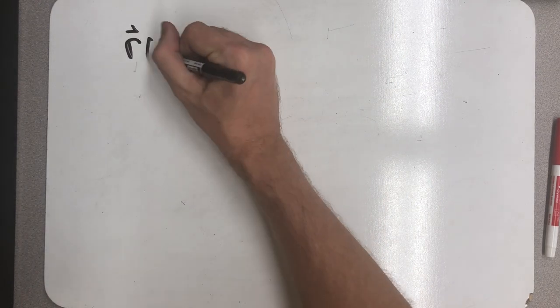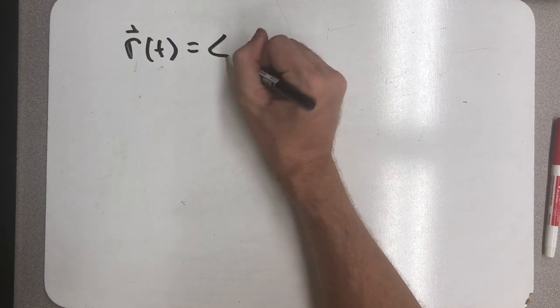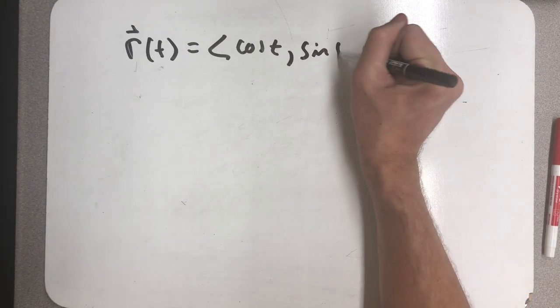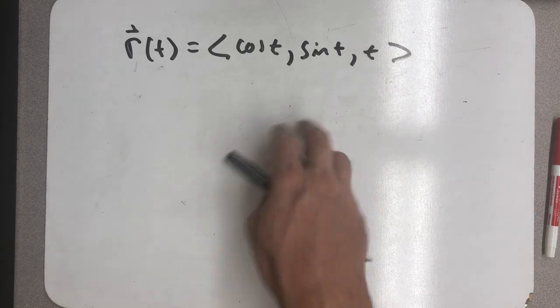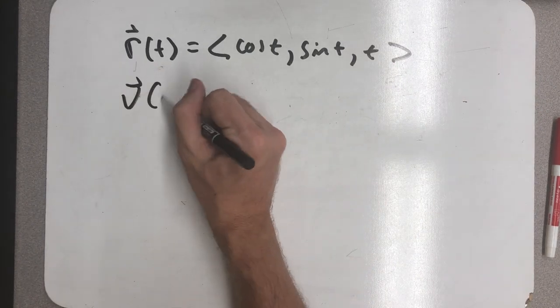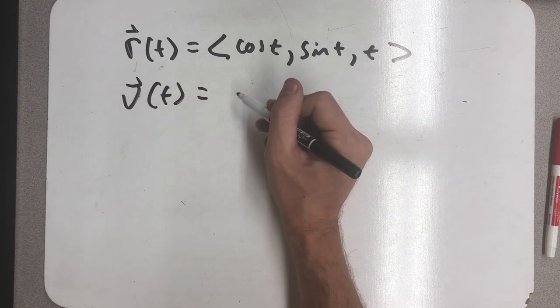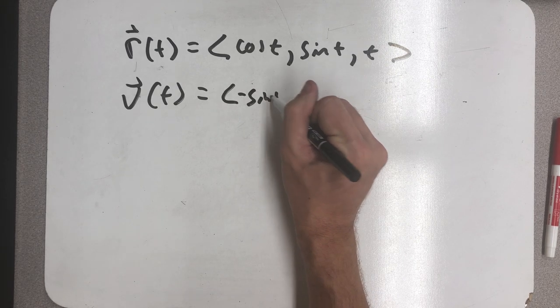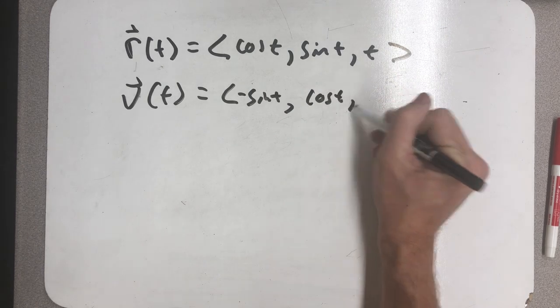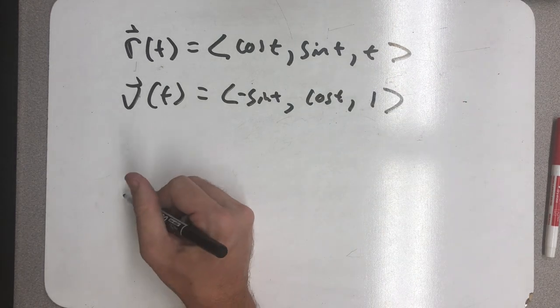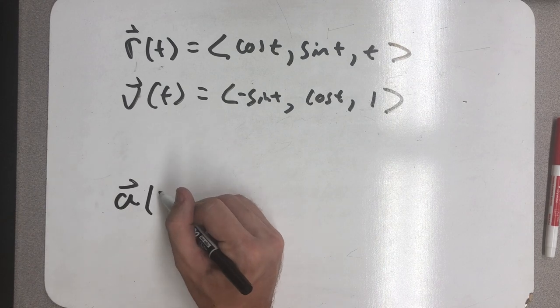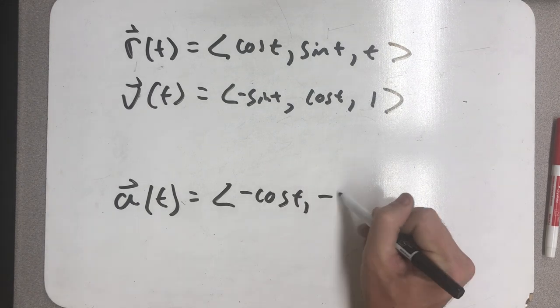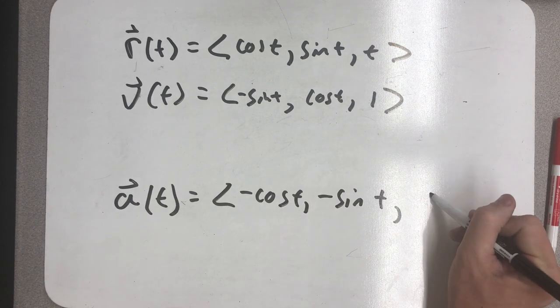We have a vector function that gives us the position of an object in motion on that helical path between time 0 and 2 pi. We just took a derivative to find the velocity vector, which was minus sine t cosine t 1. If we took one more derivative, we'd get an acceleration vector: minus cosine t minus sine t 0.